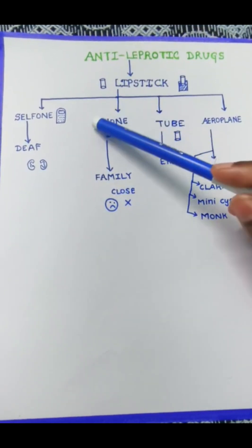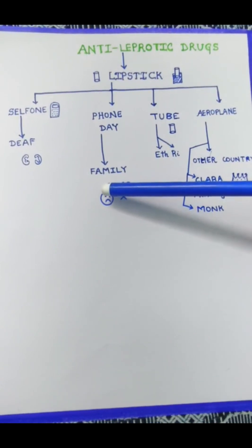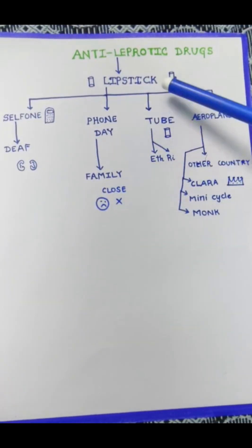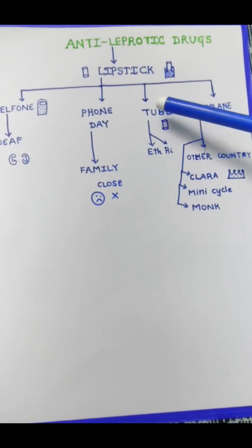So her family got super angry because she never spoke to them but only to her phone. As I told you earlier, the lipstick is in the shape of a tube. The family, they became an enemy.